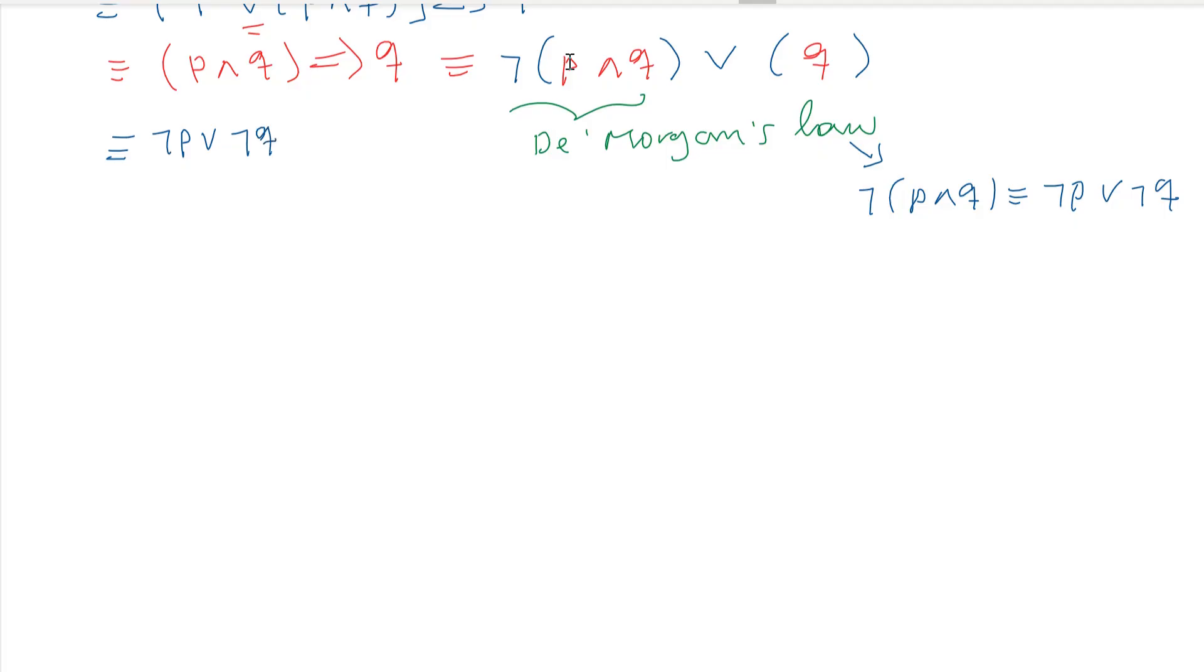Negation of [p ∧ q]. The negation of the first or the negation of second. Negation will distribute to the conjunction with disjunction or the disjunction conjunction. So, negation of p or negation of q or q.